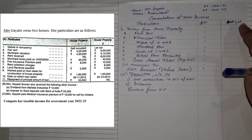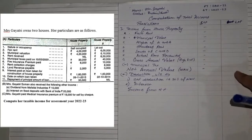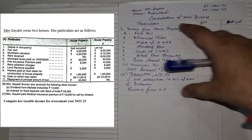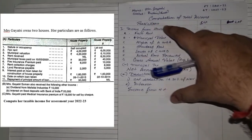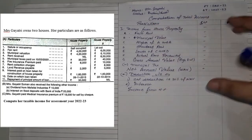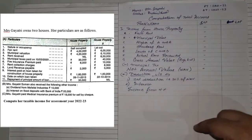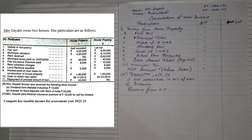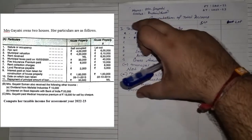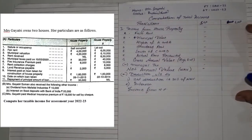Now the rule for SOP is that up to NAV, all the values of self-occupied property will be nil. So we only have to do the calculation of the LOP part. This is the sum which has computation of total income, so you will have income from house property, other sources and deduction. If in the exam they have only asked income from house property, this is it — this is the only format that has to be solved. Now for LOP, we will see what things have been given.